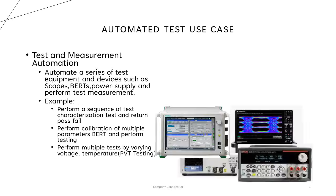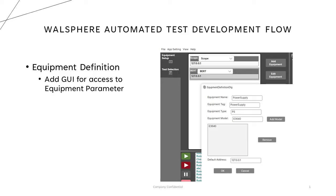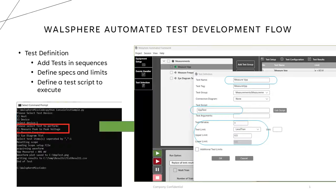Automate a series of test equipment and devices, perform calibration, and execute multiple tests with varying parameters effortlessly. Easily define equipment parameters through a GUI, simplifying the setup process for your tests. Add tests in sequences, define specs and limits, and create test scripts with ease, ensuring accurate and efficient test execution.